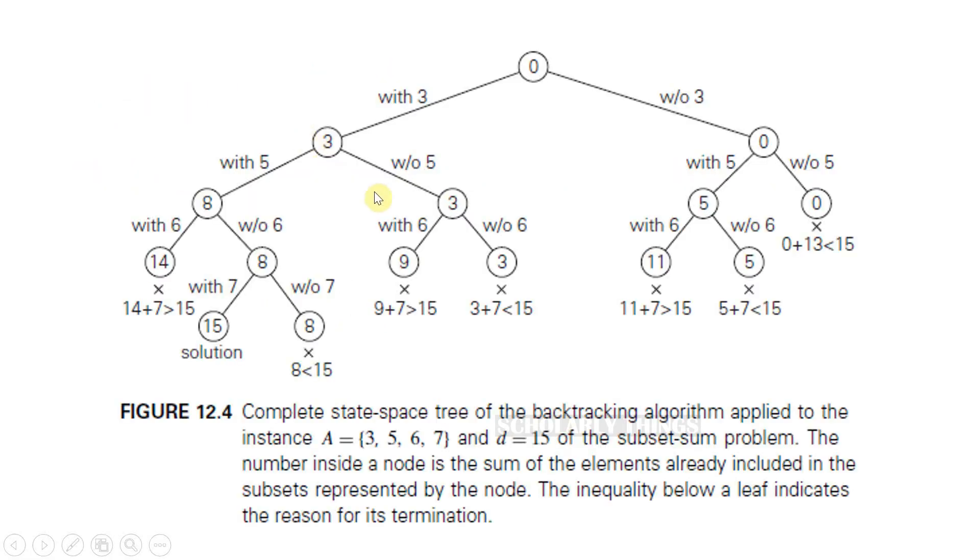This is the solution state space tree. Root represents the starting point when nothing is chosen. In this tree, the left nodes indicate the inclusion of an element and the right nodes indicate the exclusion of an element. So when you find a solution, you can easily detect whether an element was included or not included based on the path taken.